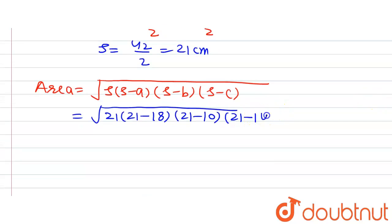Now solving it further we will get under root 21 multiplied by 21 minus 18 is 3 multiplied by 21 minus 10 is 11 multiplied by 21 minus 14 is 7.